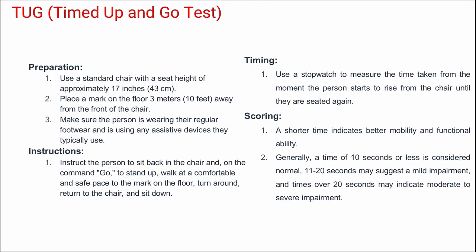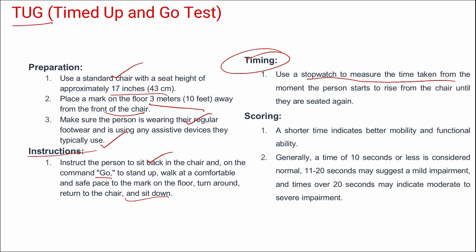Next is the Timed Up and Go Test. You need a standard chair with a seat height of approximately 17 inches and a mark on the floor 3 meters away. The person stands up on the command 'go', walks to the mark, turns around, returns, and sits down. Time is measured using a stopwatch. A time of 10 seconds or less is normal, 11–20 seconds suggests mild impairment, and over 20 seconds indicates moderate to severe impairment.